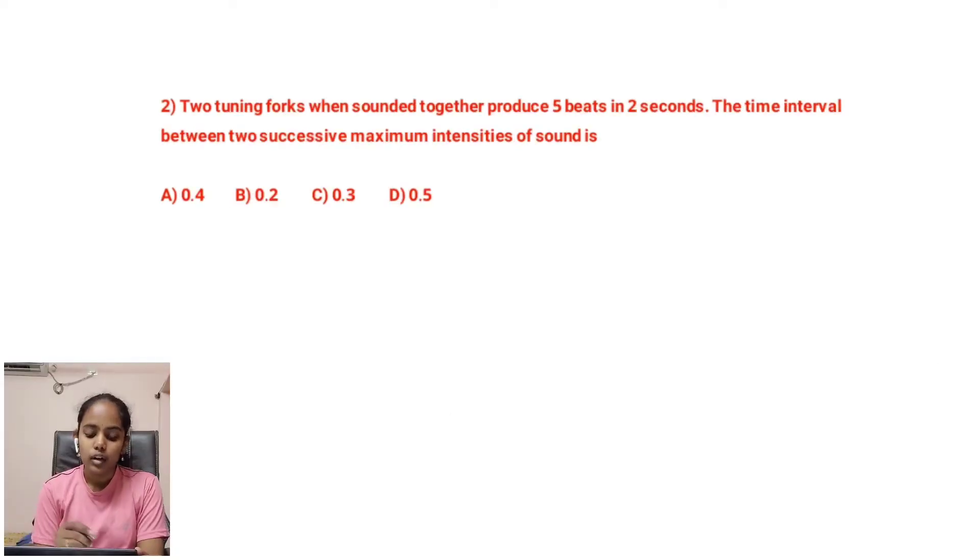Second question. Two tuning forks when sounded together produce 5 beats in 2 seconds. The time interval between 2 successive maximum intensities of sound is.